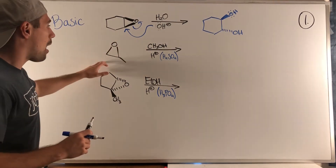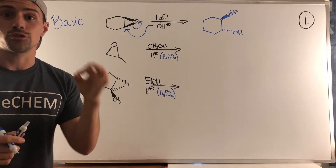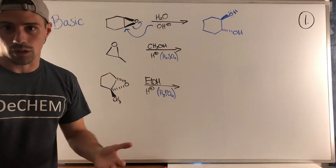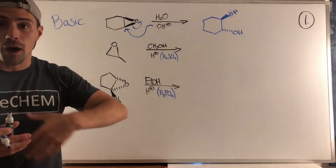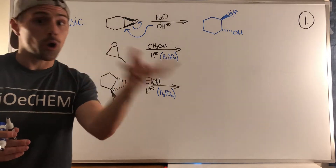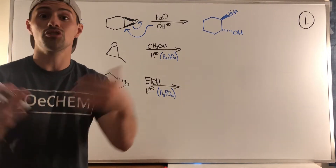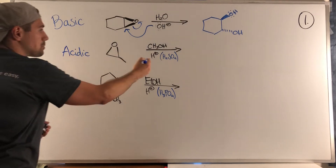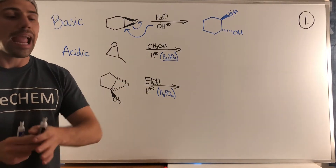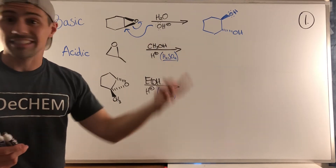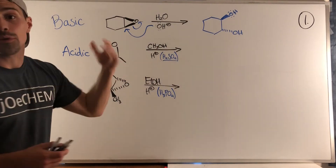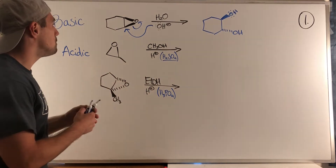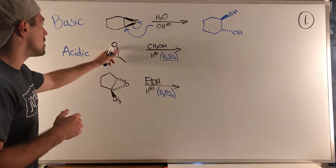Moving on to the second example: we have an asymmetrical epoxide, so we need to make sure we do our analysis to get the regiochemistry correct. I wrote H+ on the worksheet, but if I put in H2SO4 — that is an acid, a tip-off. You're looking for H+, H3O+, or an example of an acid that is a source of H+, so this is clearly acidic. In acidic conditions we'd want a non-nucleophilic acid; we would not want HBr because Br− could attack as a nucleophile.